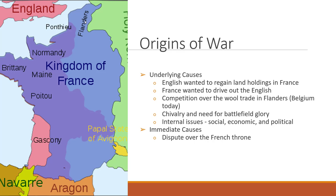The immediate cause of the war was a dispute over the French throne. To understand it, we look at a family tree of French kings. It goes back to Philip III, who ruled 1270–1285. His successor Philip IV married Joan I of Navarre, and Philip IV also had a daughter, Margaret of France, who married Edward I of England, as well as another son, Charles, Count of Valois.